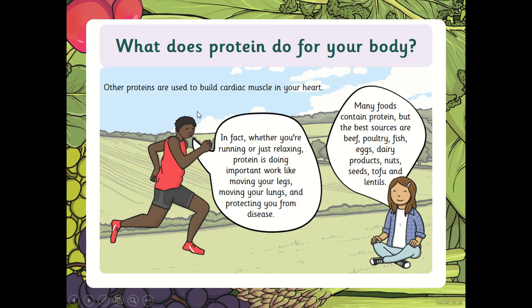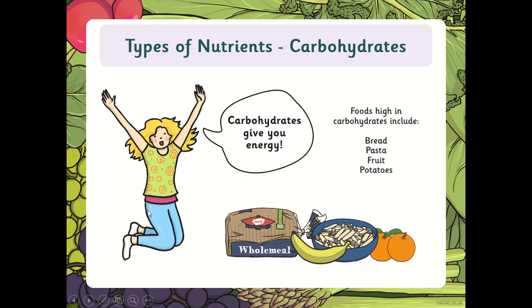Other proteins are used to build cardiac muscle in your heart. Whether you're running or just relaxing, protein is doing important work — like moving your legs, moving your lungs, and protecting you from disease. Many foods contain protein, but the best sources are beef, poultry, fish, eggs, dairy products, nuts, seeds, tofu, and lentils. These are really good sources of protein with a very important job.